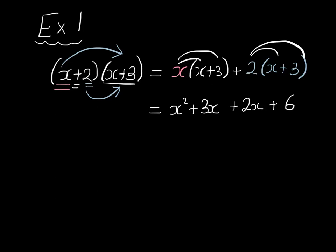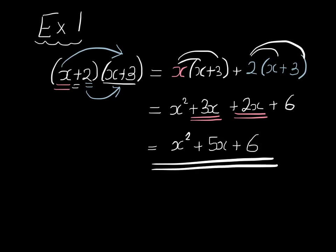Then we collect like terms. We have 3x here and 2x here, they add up to 5x. So this is x squared plus 5x plus 6. And we're done. That's the first example.